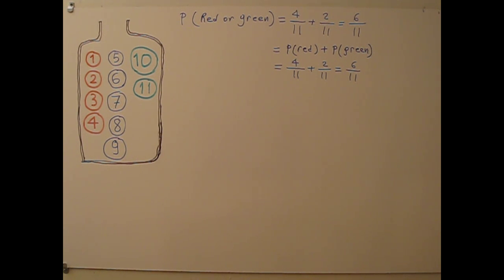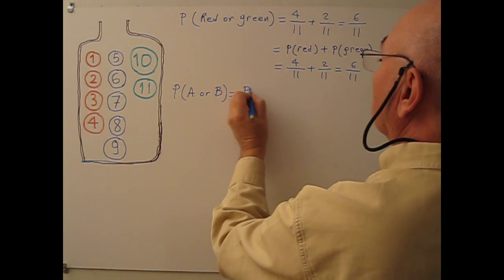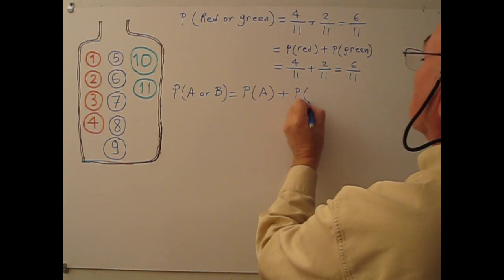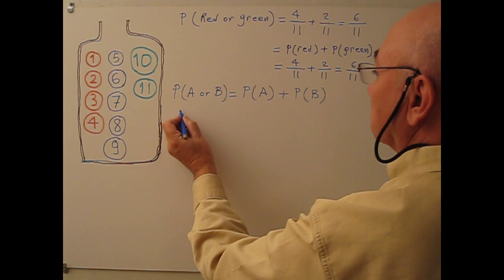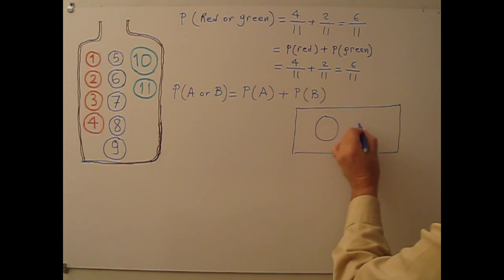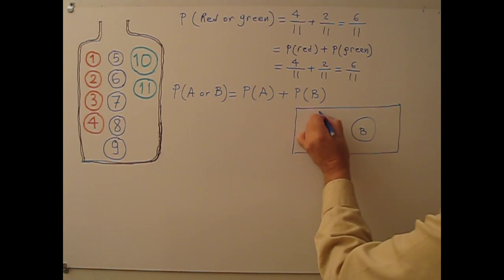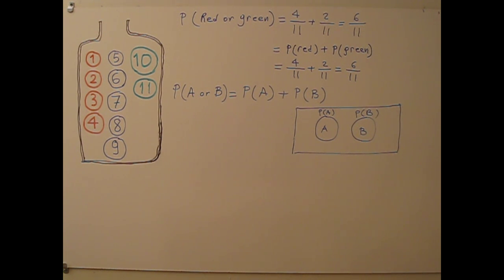From this example, we can get the addition rule for Mutually Exclusive events. The general formula is: P(A or B) = P(A) + P(B). If we show these two events in a Venn diagram, event A and event B are disjoint — they don't overlap. This is called a Mutually Exclusive event.